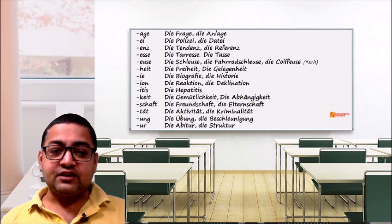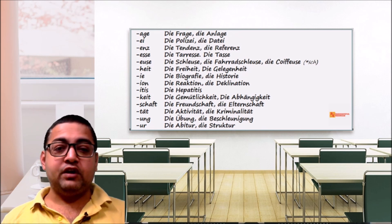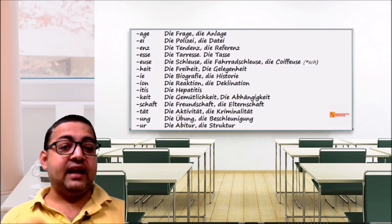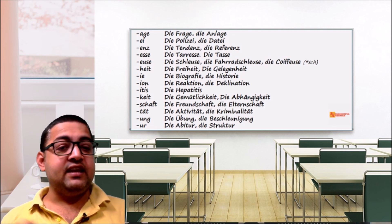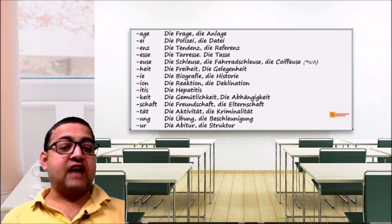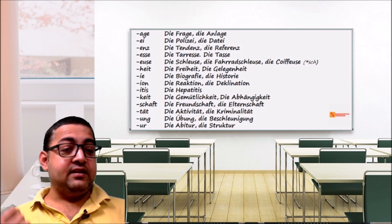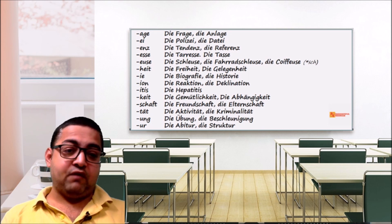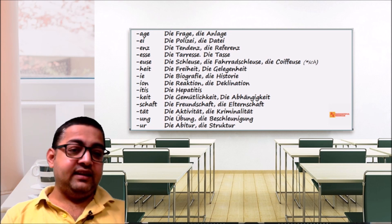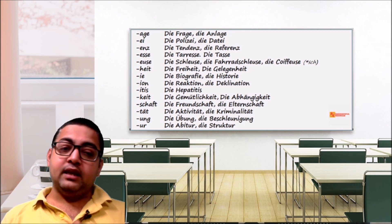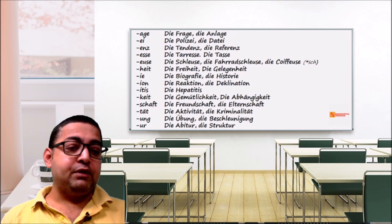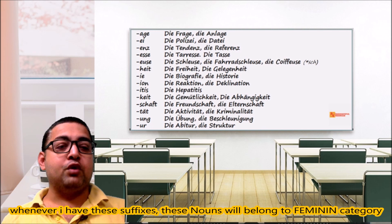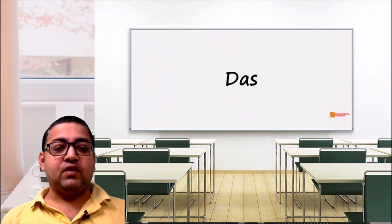Feminine suffix examples include: die Anlage, die Polizei, die Tendenz, die Referenz. Suffixes like -euse (die Friseuse, used in Switzerland), -heit, -keit (die Gemütlichkeit, die Abhängigkeit), -schaft (die Freundschaft), -tät (die Aktivität, die Kriminalität), -ung (die Übung, die Beschleunigung), -tur (die Struktur). Whenever a noun has these suffixes, it belongs to the feminine category.